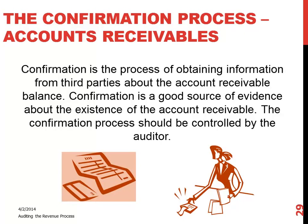They might respond with issues about a sale that was made or a shipment. But a lot of times they don't respond, so auditors have to continuously follow up. A confirmation process is basically obtaining information or evidence from the third party — in this case, the customer.